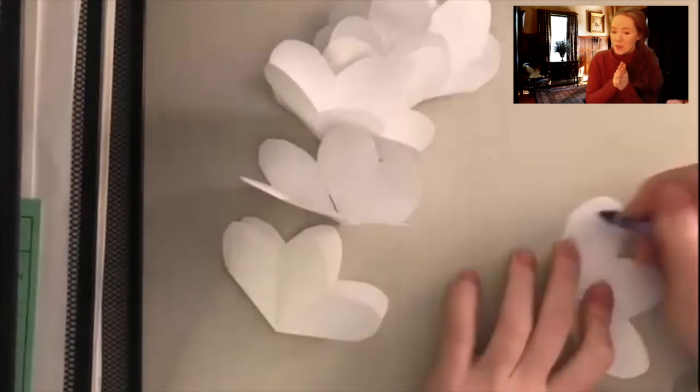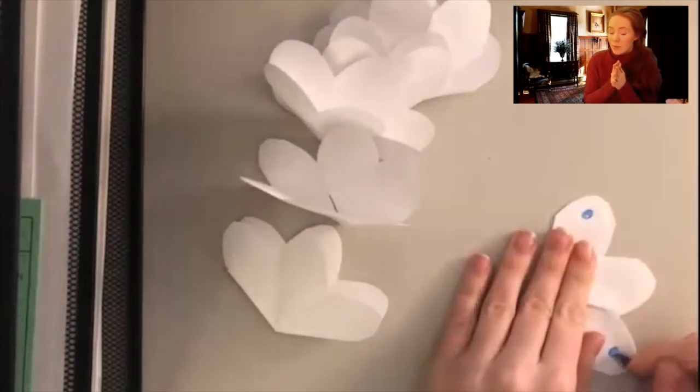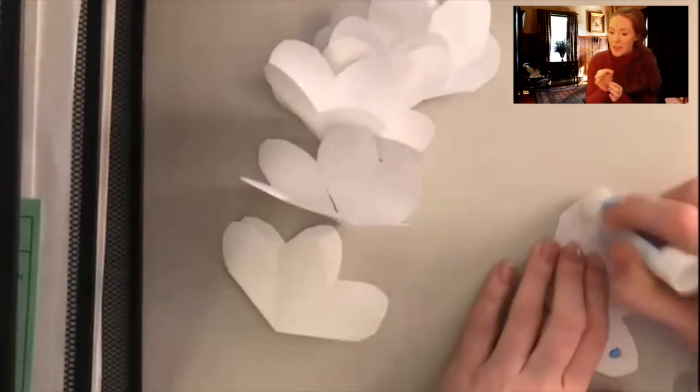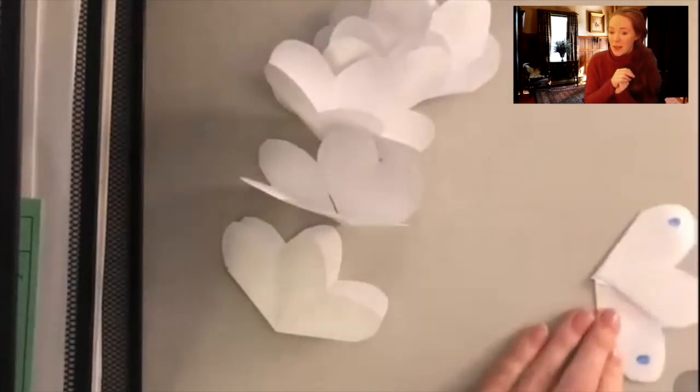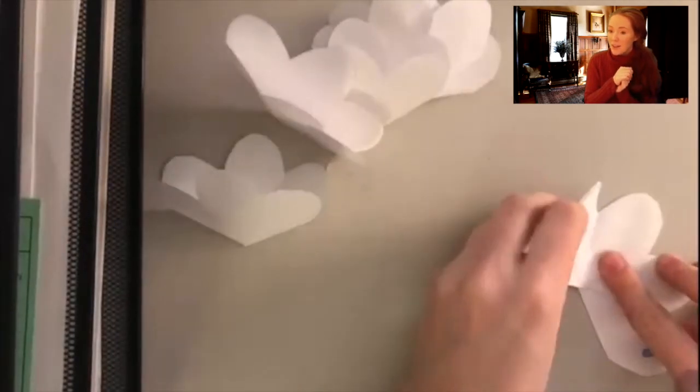Now for this part, I'm using a crayon to help you see what's happening. We're going to glue different parts of the flower. So where I put the dots, that's where you're going to put the glue. Make sure to pause after each step here. You're going to put that one petal on that piece of glue and then another petal on the second piece of glue.